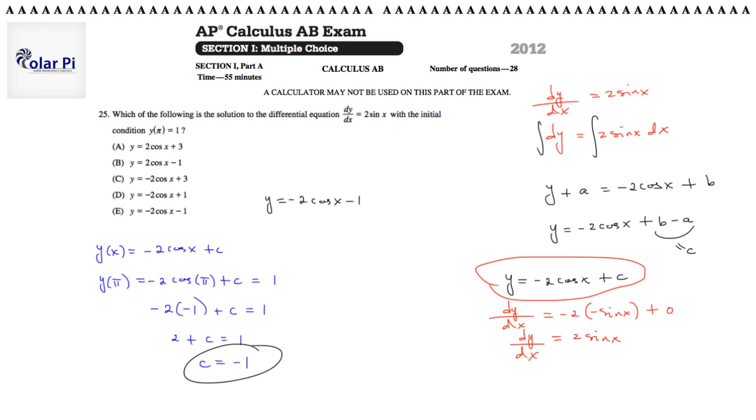And now that we know the particular value of c, we could write that our particular solution is y equals negative 2 cosine x minus 1, replacing that c with the correct value of negative 1. And the only answer that says that is answer choice E, which is our final answer.